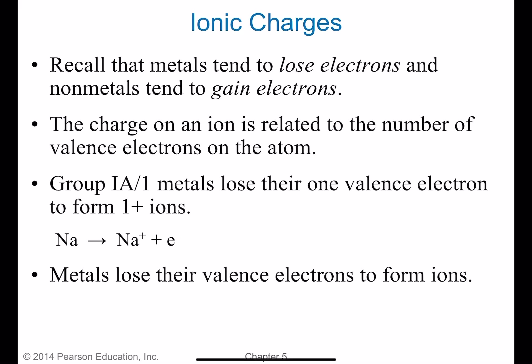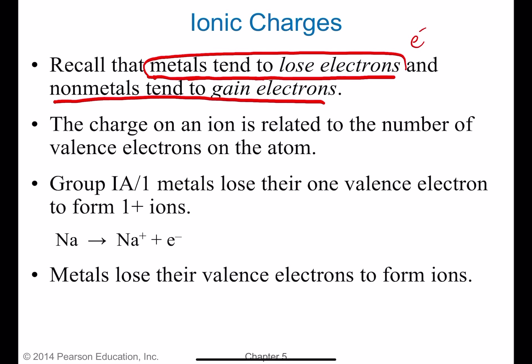In this video we're going to talk about ionic and covalent bonding and introduce a few new terms regarding ions or charged particles. Metals tend to lose electrons and non-metals tend to gain electrons. Recall that an electron is negatively charged, so if a neutral metal atom loses an electron, it's losing a negative charge and will have an overall positive charge. If a non-metal gains an electron, it will have an overall negative charge.